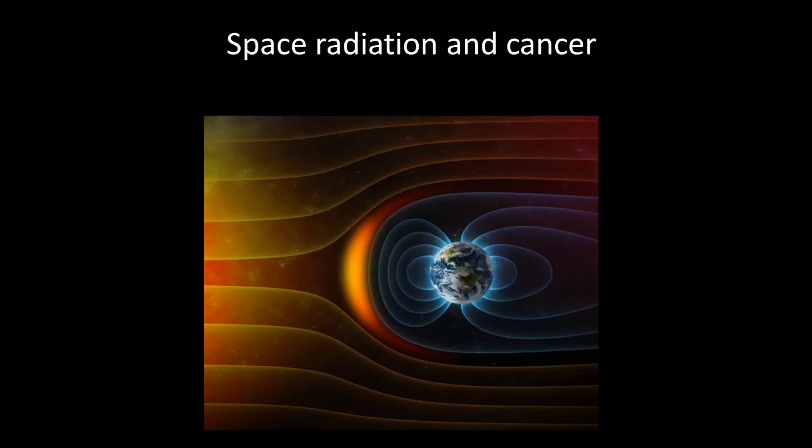However, there is something different between Earth and space, which affects this amount of radiation. On Earth, the magnetic field of Earth and the atmosphere protects human body by absorbing radiation coming from space, known as space radiation. This picture can help you to visualize it.